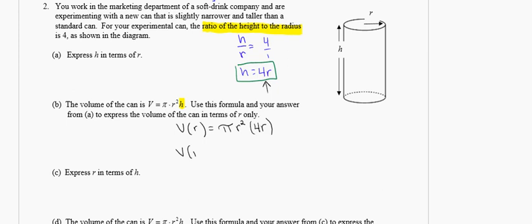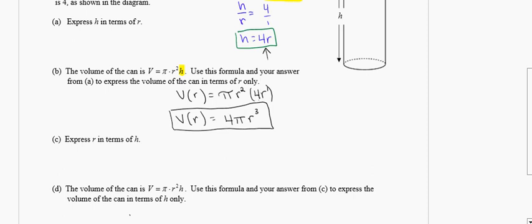Substituting h with 4r into the volume formula V = πr²h gives V = π times r squared times 4r. Simplifying by adding exponents, that becomes V = 4πr³. For part C, we solve for r in terms of h: since h = 4r, we get r = h over 4, or equivalently r = one-fourth h. Those are two different ways to express the same thing.